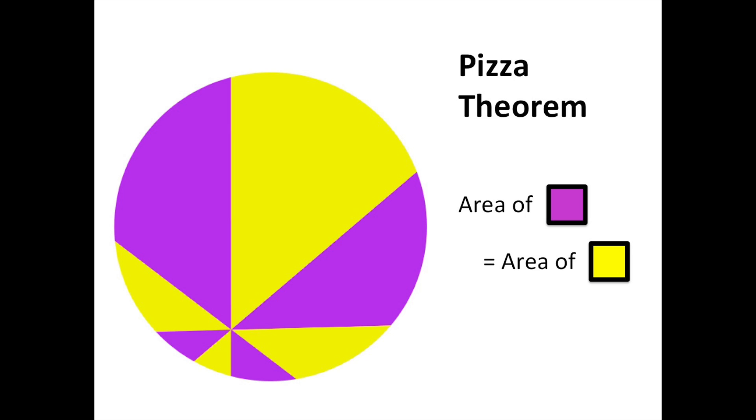There's an easy solution called the pizza theorem. If each person takes alternating slices, they each end up with exactly half of the pizza. It doesn't matter where the center point for cutting is specified. This strategy gives each person the same amount.